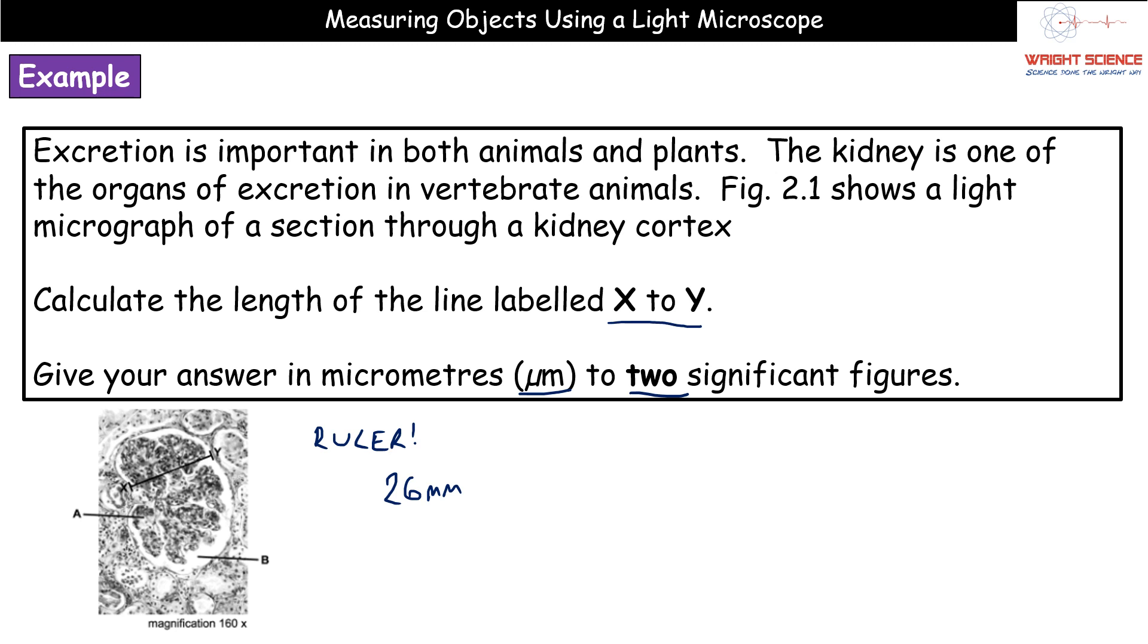I recommend that when you take these measurements check it. So do it once, move the ruler away, put it back on from fresh again and check your measurement. If the two match up perfect carry on. If they're different repeat it again and do it a third time. Whichever one you've got as a second option then that's the one to use. So we've measured x to y, we've got 26 millimeters.